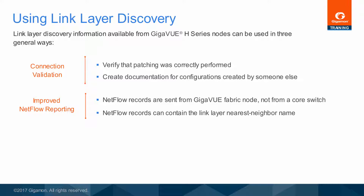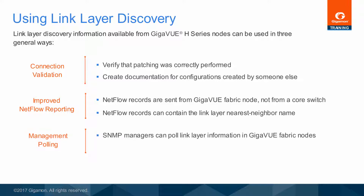GigaSmart generated NetFlow can be configured to include the nearest neighbor identity obtained from the link layer port discovery, which simplifies the process since the correct name is included within each NetFlow summary report. As an extra benefit, SNMP management platforms can poll GigaView nodes for information gathered through the link layer port discovery process, using the standard LLDP or CDP MIBs for polling. Similarly, the Gigamon API can be used to gather that same information.